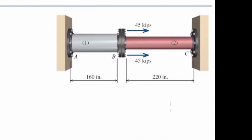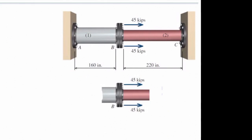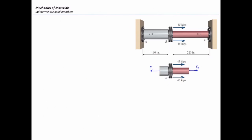But how much is the share of each element? We need to determine the internal forces using a free body diagram. I'm going to cut the structure from two points, put unknown forces here, and try to determine how much is internal force F1 and F2. Writing the equilibrium equation — sum of forces in x-direction equal to zero — gives us: negative F1 plus 2 times 45 plus F2 equals zero. But we have two unknowns and one equation, so we can't solve it. That's why we call it indeterminate. We need at least one extra equation.